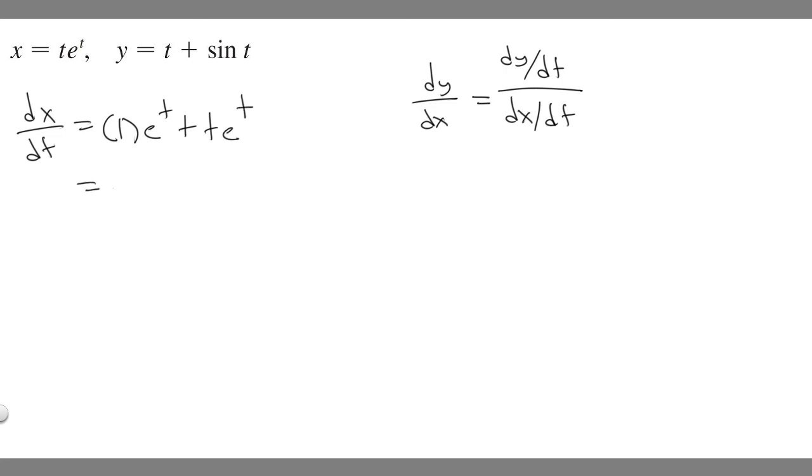So it's just going to be e to the t plus t times e to the t. What I'm going to do is factor out an e to the t. So e to the t, and then it's just going to be 1 plus t. Because e to the t times 1 is e to the t, and e to the t times t is t e to the t. So that's dx/dt.